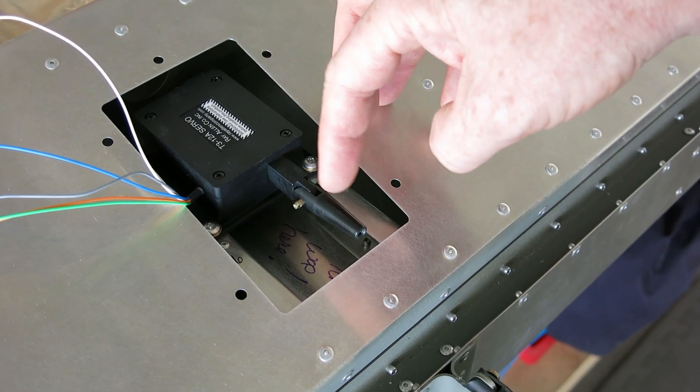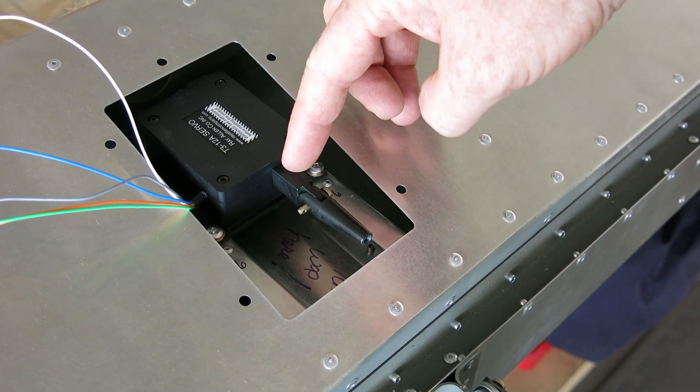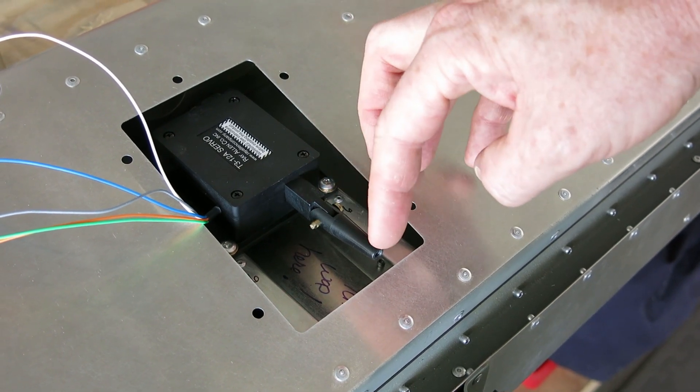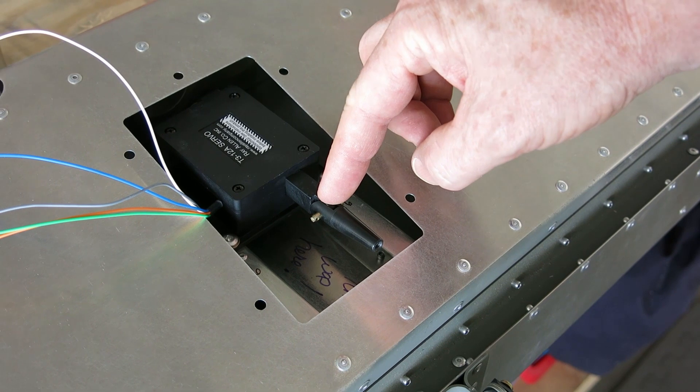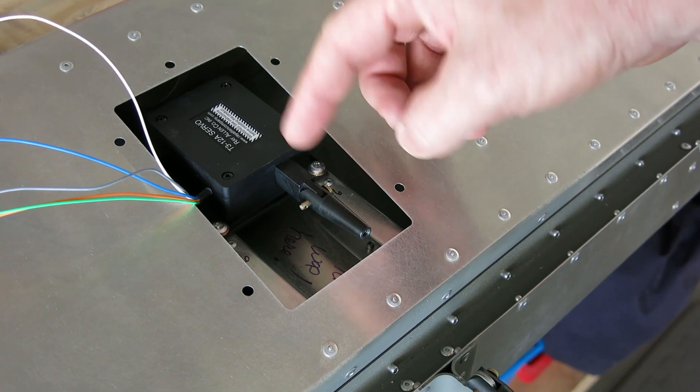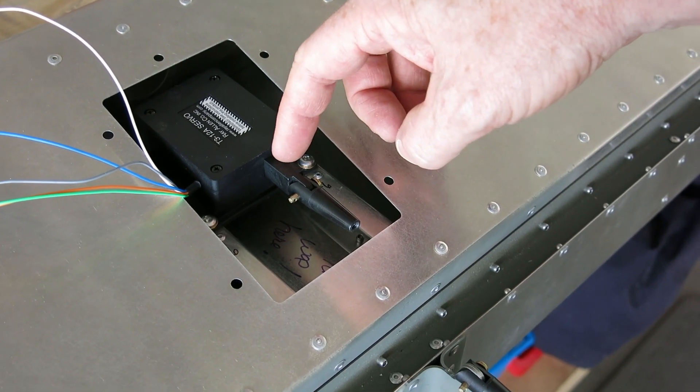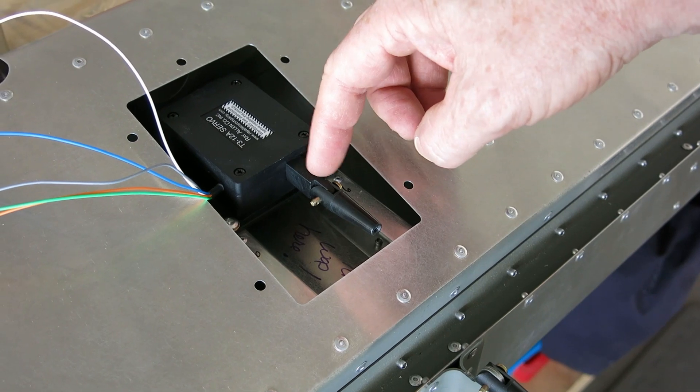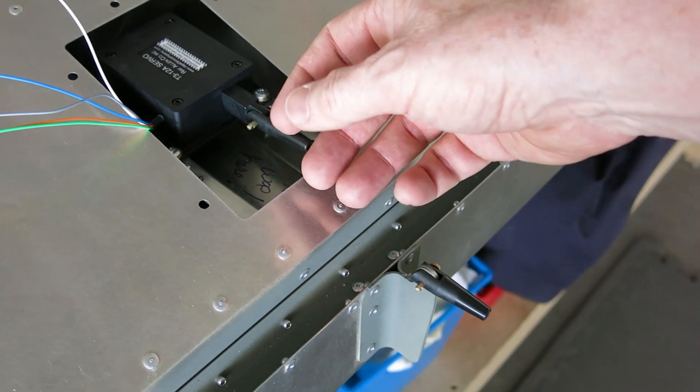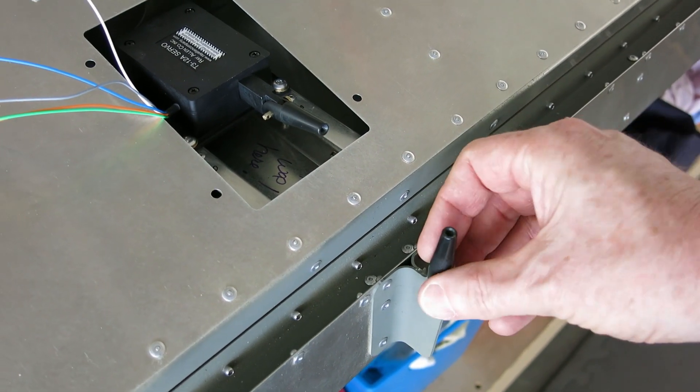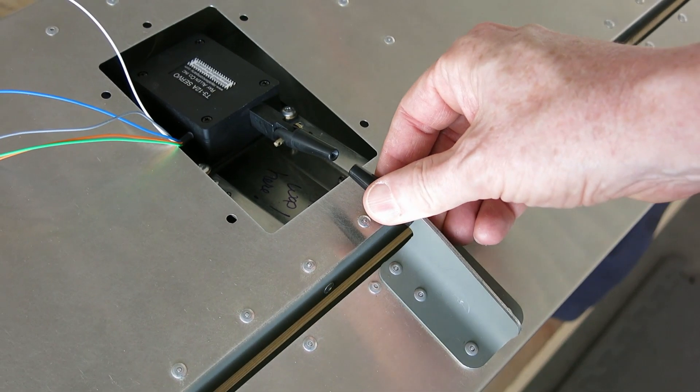We ran it all the way in, measured where it starts, and ran it all the way out, measured that distance, cut it in half, split the difference, and then marked it. I just put a little light mark on this and then ran it to that point. At that point we've got the clevises on here.